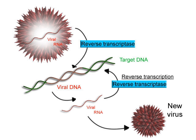If the cell has a nucleus, the RNA may be further processed, including polyadenylation, capping, and splicing. The RNA may remain in the nucleus or exit to the cytoplasm through the nuclear pore complex. The stretch of DNA transcribed into an RNA molecule is called a transcription unit and encodes at least one gene. If the gene encodes a protein, transcription produces messenger RNA (mRNA), which serves as a template for the protein's synthesis through translation. Alternatively, the transcribed gene may encode non-coding RNA such as microRNA, ribosomal RNA, transfer RNA, or enzymatic RNA molecules called ribozymes.